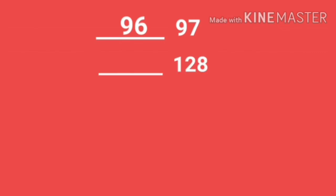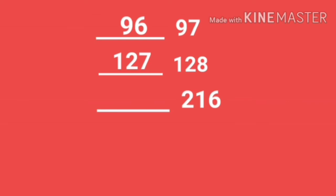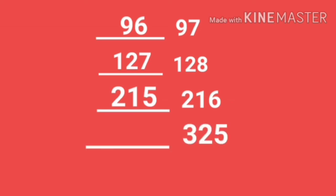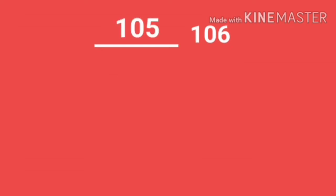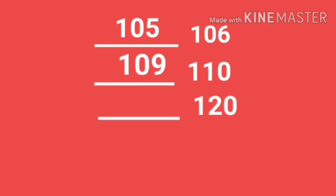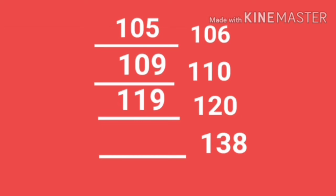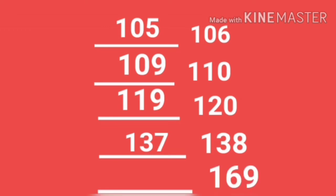The before number for 128 is 127. The before number for 106 is 105. The before number for 110 is 109. The before number for 120 is 119. The before number for 138 is 137. The before number for 169 is 168.